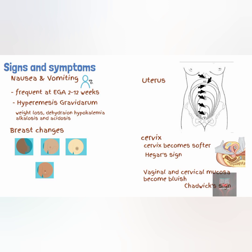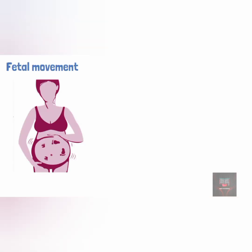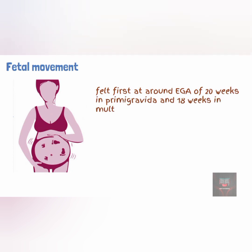The pregnant woman also reports perception of fetal movements, which occurs first at approximately 20 weeks gestational age in primigravida and at 18 weeks gestational age in multiparous women. The first fetal movement felt by the mother is called quickening.